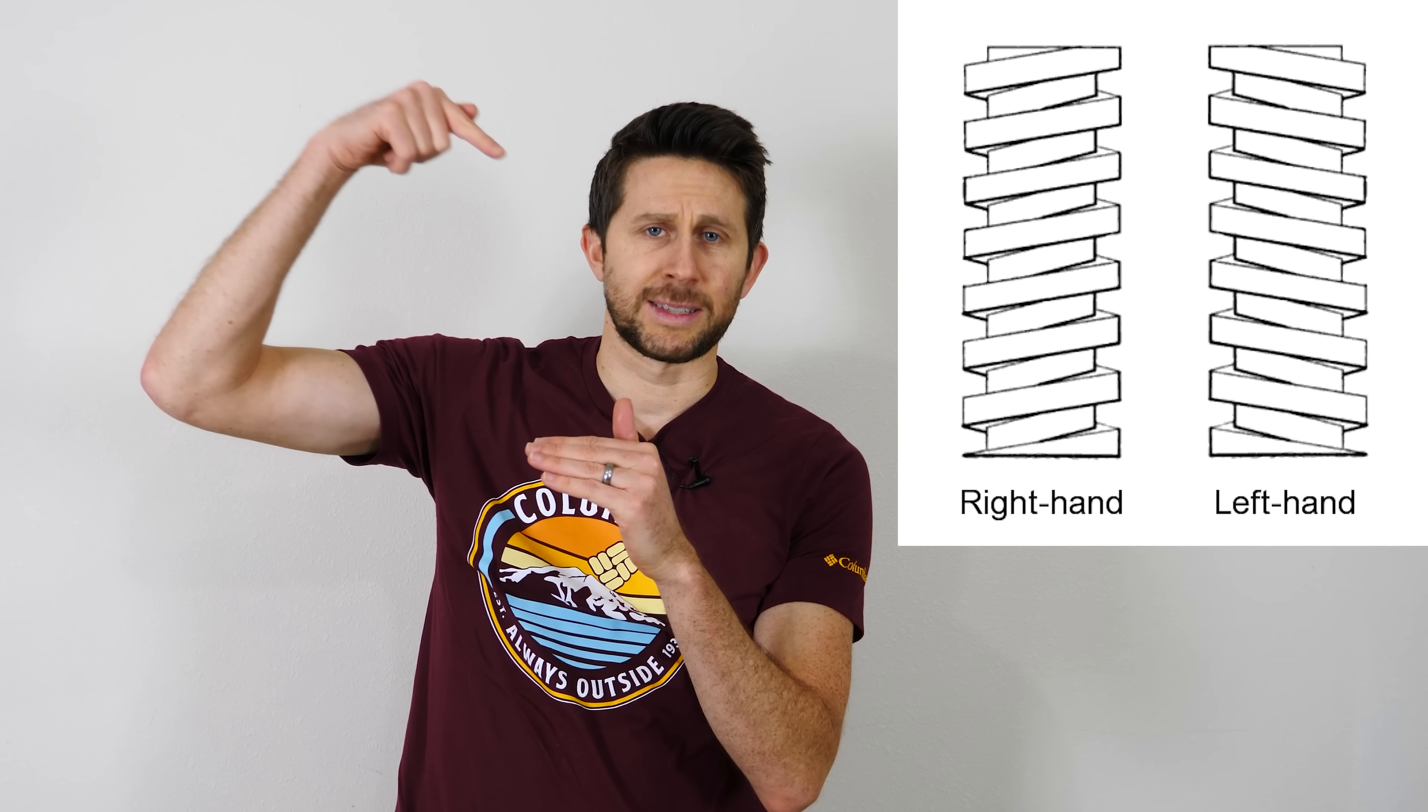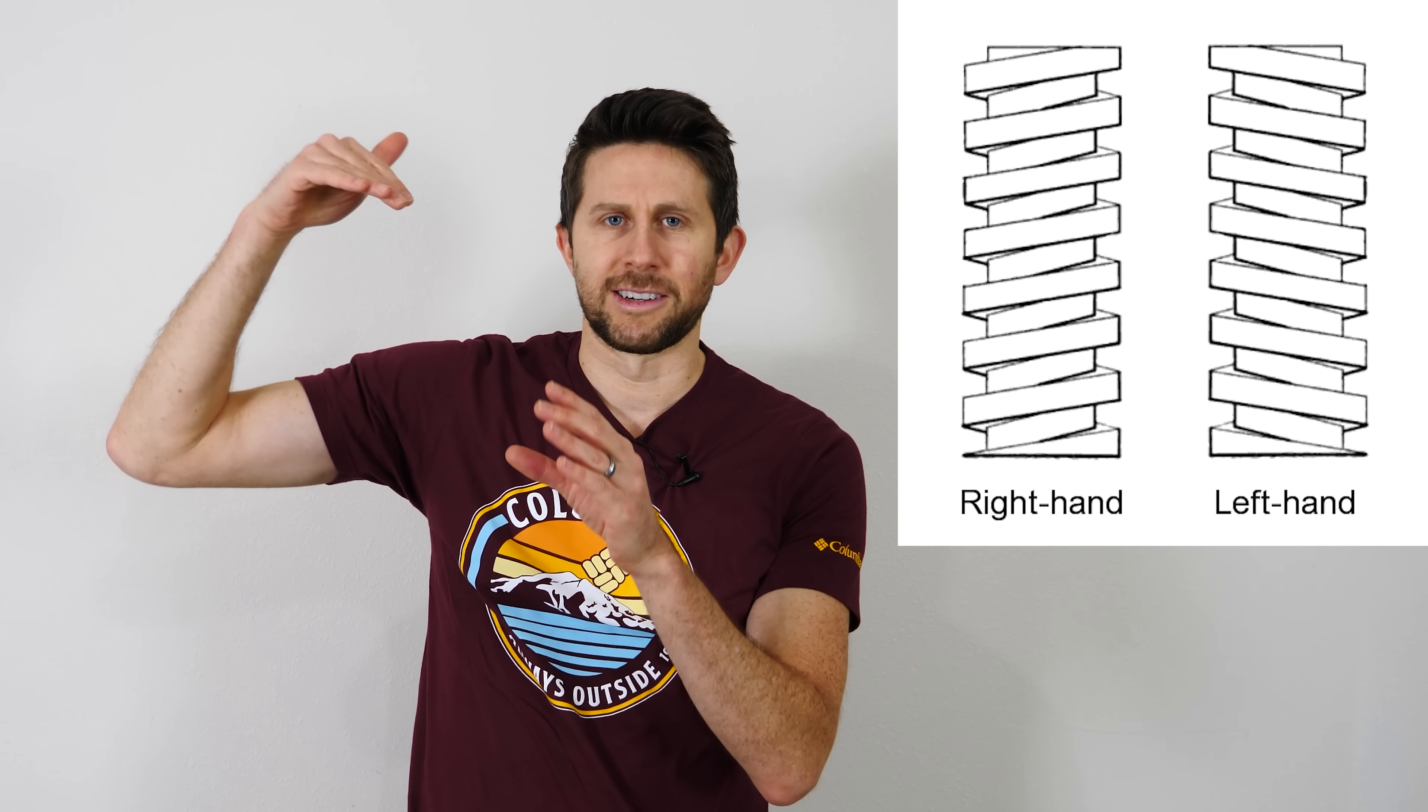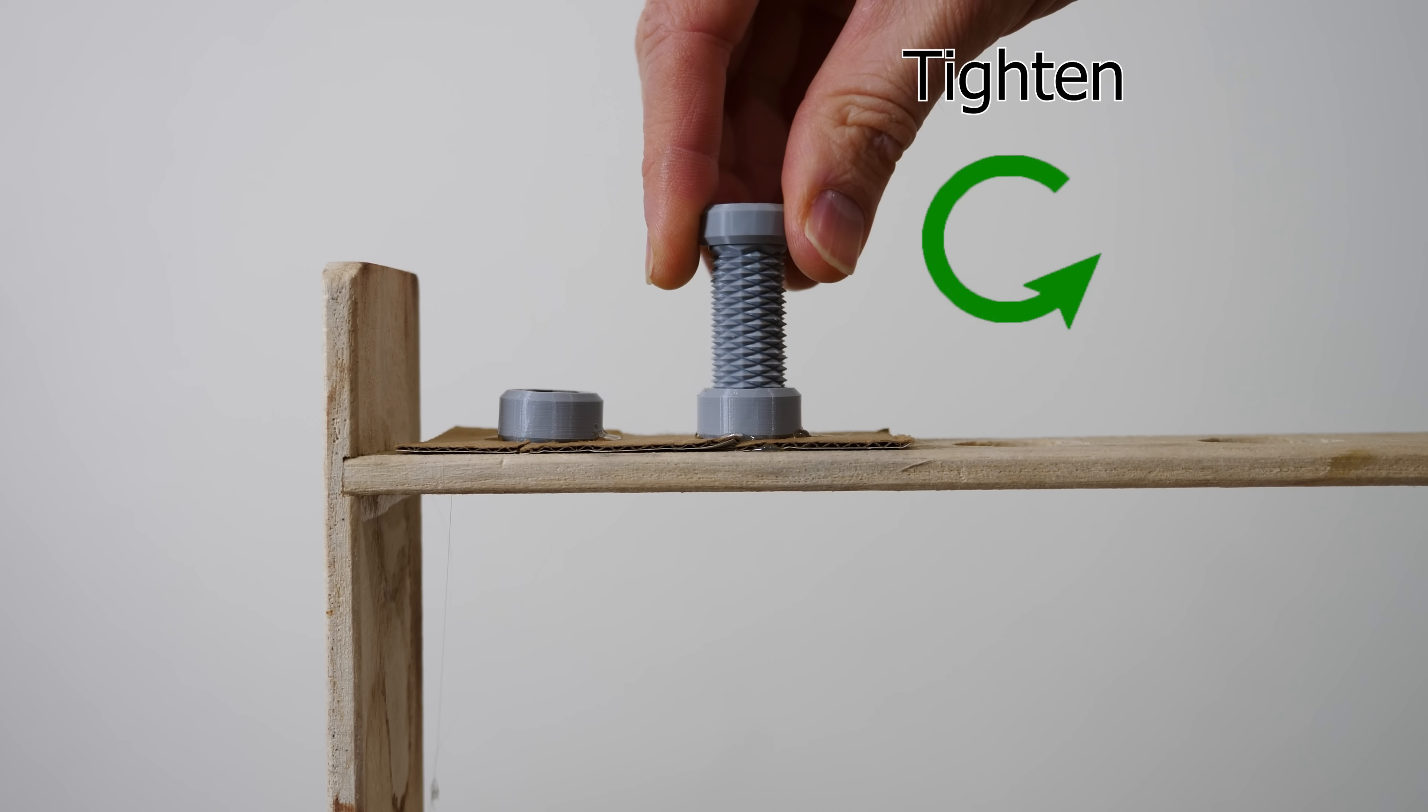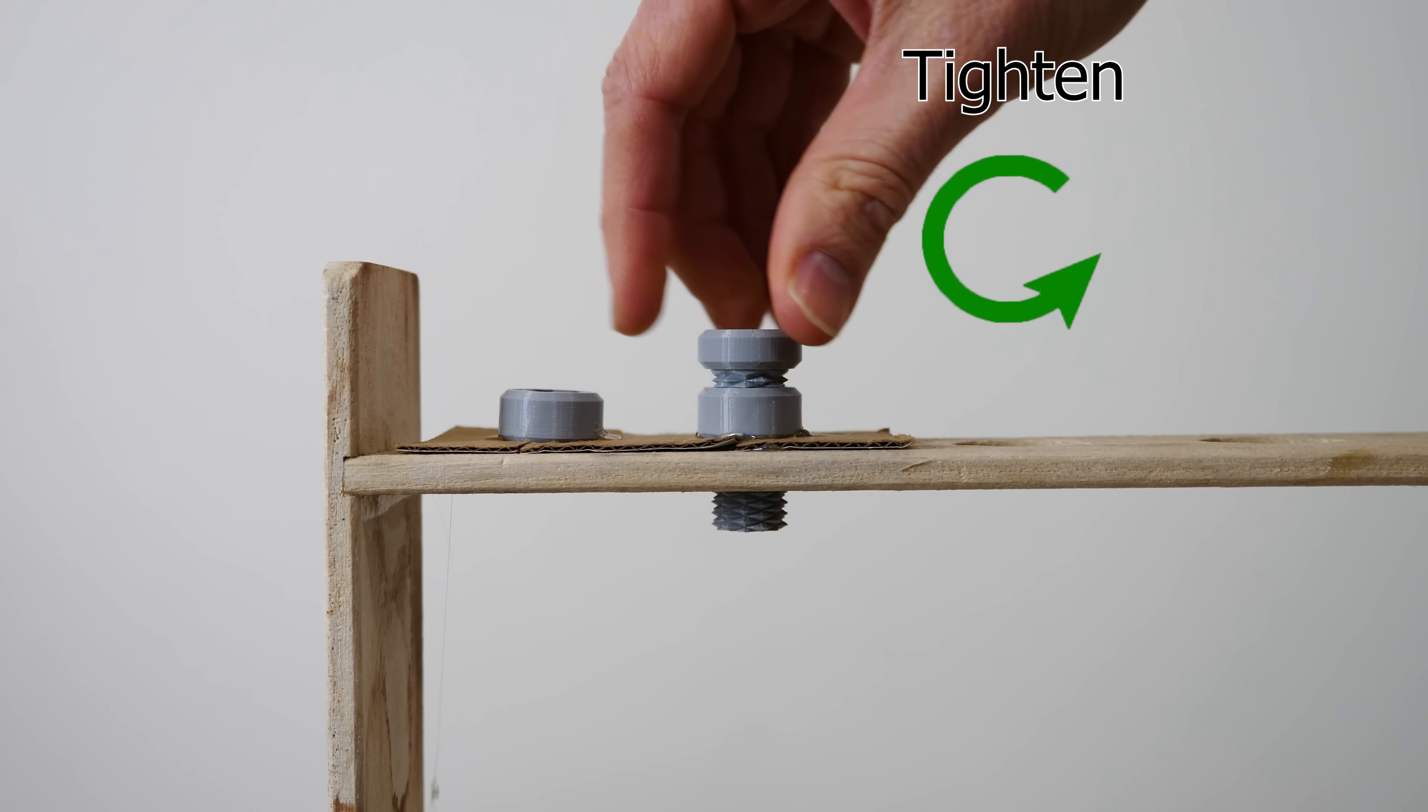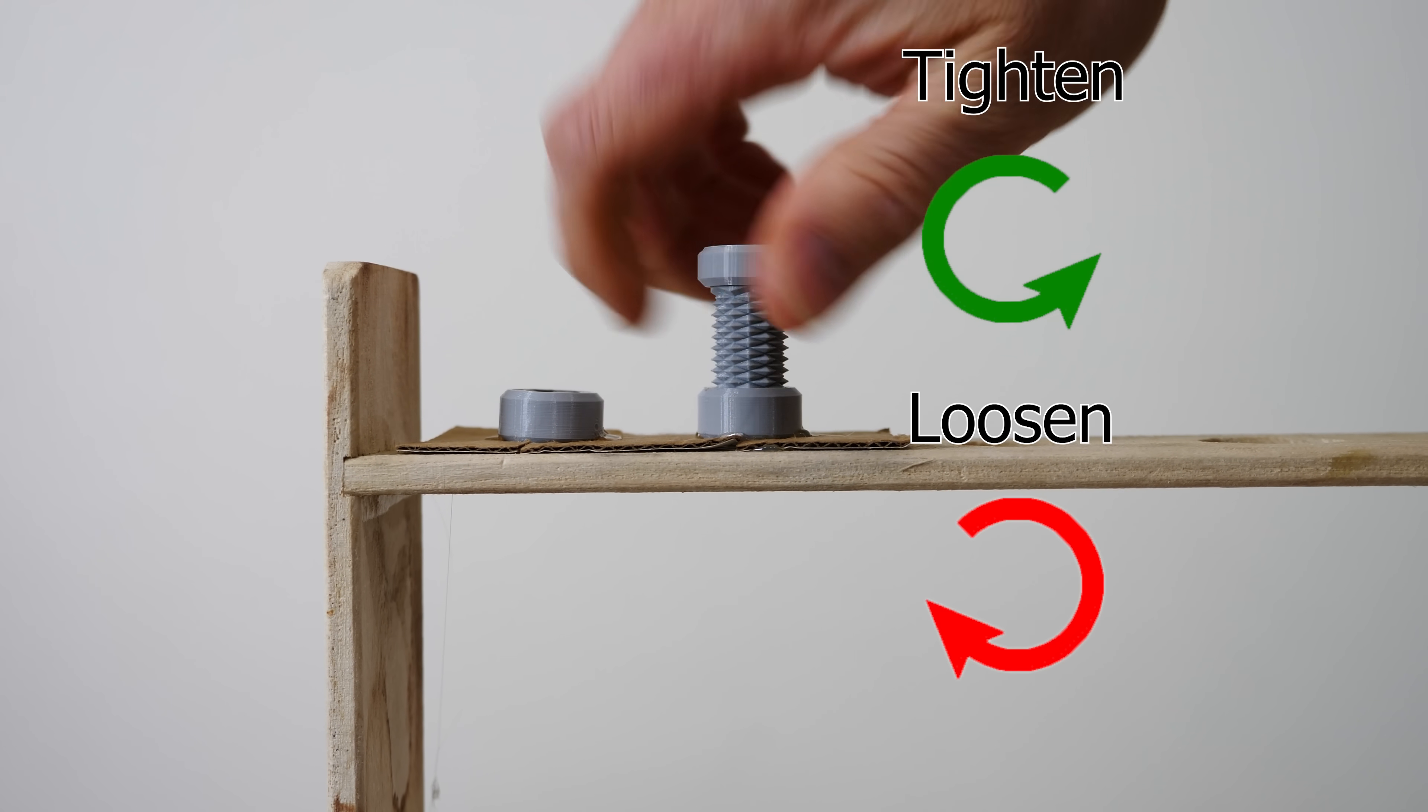So usually for a screw or a bolt, the angle of incline is in a specific direction, depending on which way you want to turn the screw in order to move it. But what's really cool is I found a screw that I could 3D print that has actually made the threads that can go clockwise or counterclockwise. Watch what happens when I screw this in the counterclockwise direction. It goes down and gets tightened. Now I unscrew it in the clockwise direction.